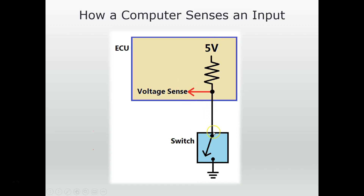If you know anything about voltage drop: when the switch is open, no voltage will drop across the resistor, so we would sense 5 volts. However, when the switch is closed, all of the voltage drops across the resistor, and we have 0 volts from that point on down, so we would sense 0 volts. That's basically how the computer determines whether the switch is open or closed — if the switch is closed, you measure 0 volts; if the switch is open, you measure 5 volts.